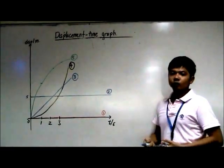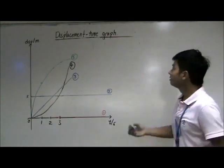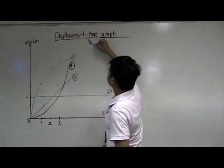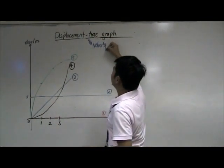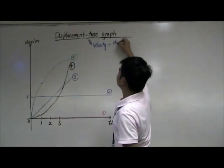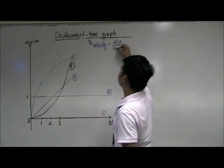The thing we look out for when we describe a displacement-time graph will be velocity. Velocity is actually equal to the displacement over time.